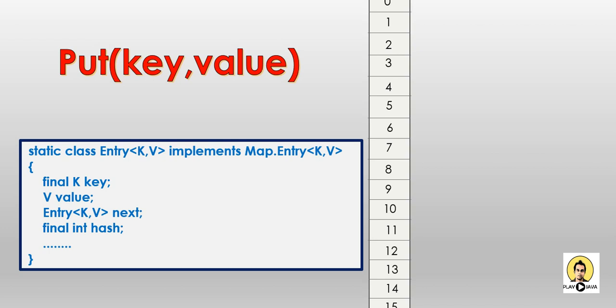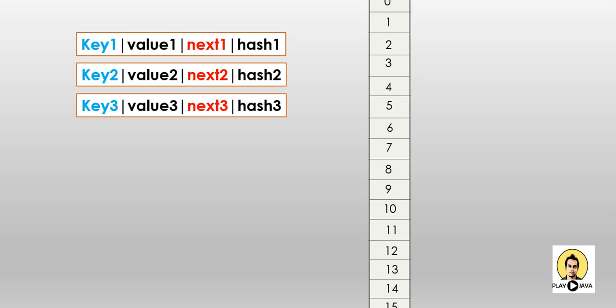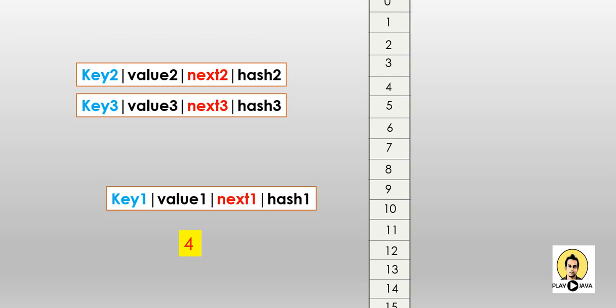With entry nodes key1, key2, and key3, we have three entities. When putting the first value — the node with key1, value1, next1, and hash1 — the hash code is calculated and based on that hash code the bucket index is found. Here, as you can see, 4 is the index of the bucket. This node with key1, value1, next1, and hash1 will go to the bucket with index 4. In this way other nodes are put into the HashMap, and depending on the hash code the index is calculated.